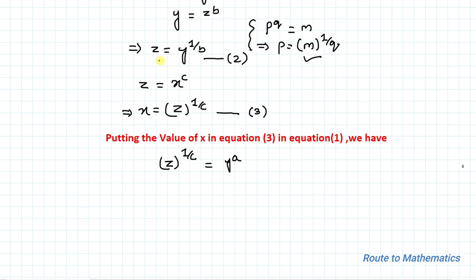Now from equation 2 you can see that z equals y to the power 1 by b. So substituting, we get (y to the power 1 by b) to the power 1 by c equals y to the power a.